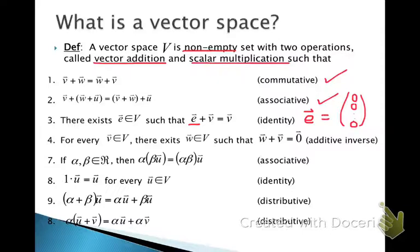For every vector V in the vector space, there is a W somewhere in the vector space such that W plus V is equal to zero. This is the additive inverse, and we know that W must be equal to minus V.